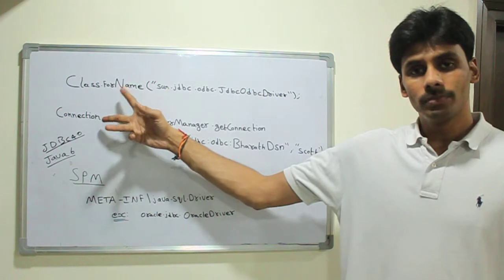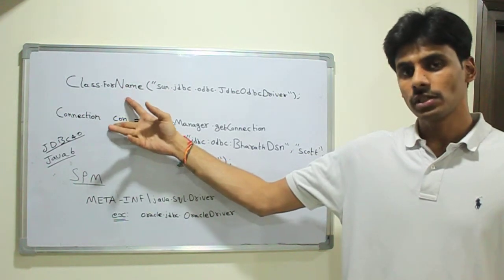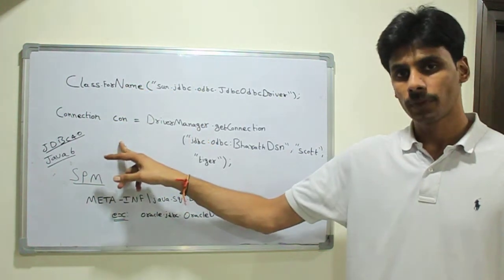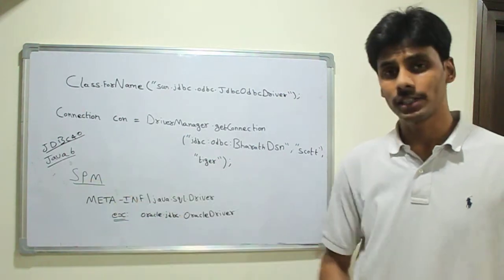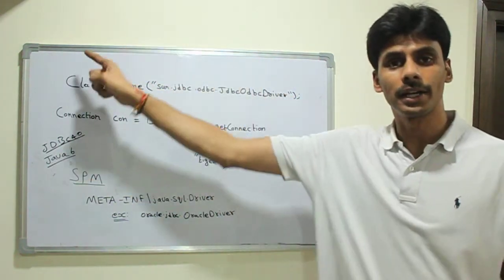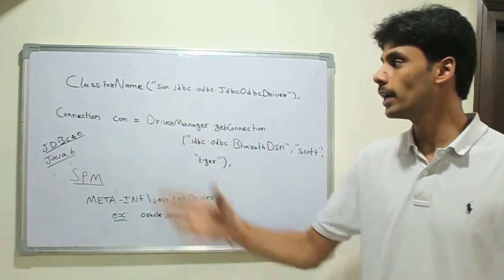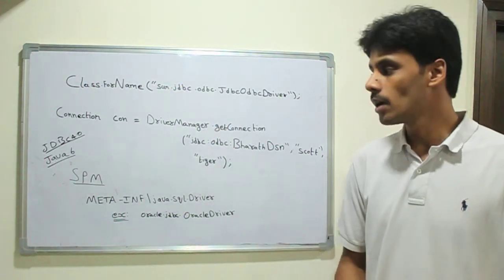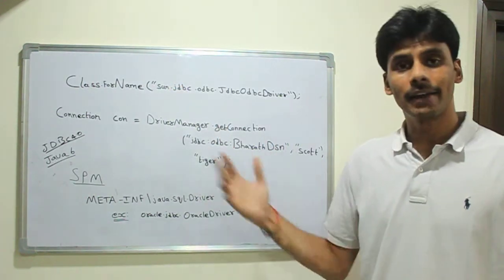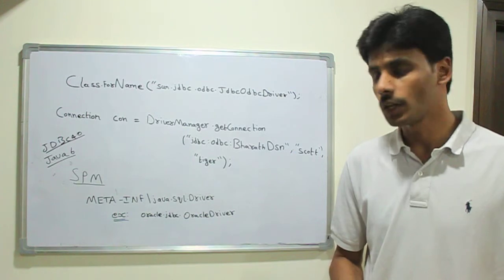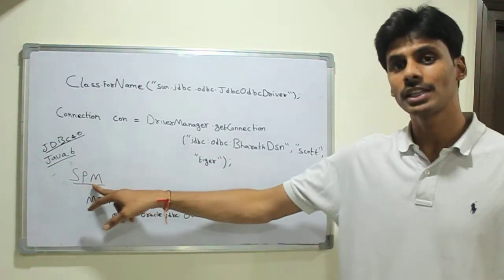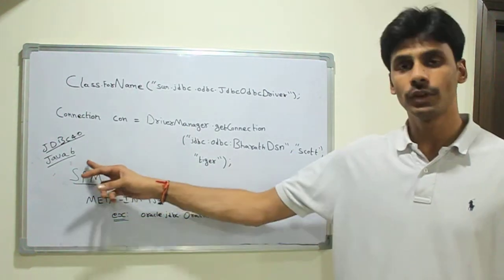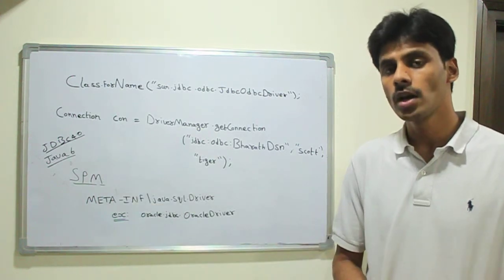So we had to do two steps to establish a connection before Java 6 and JDBC 4. But with Java 6, this step got eliminated — we no longer load the driver into memory manually. The drivers get automatically registered using a mechanism called the service provider mechanism, which is a new feature in Java 6 and JDBC 4.